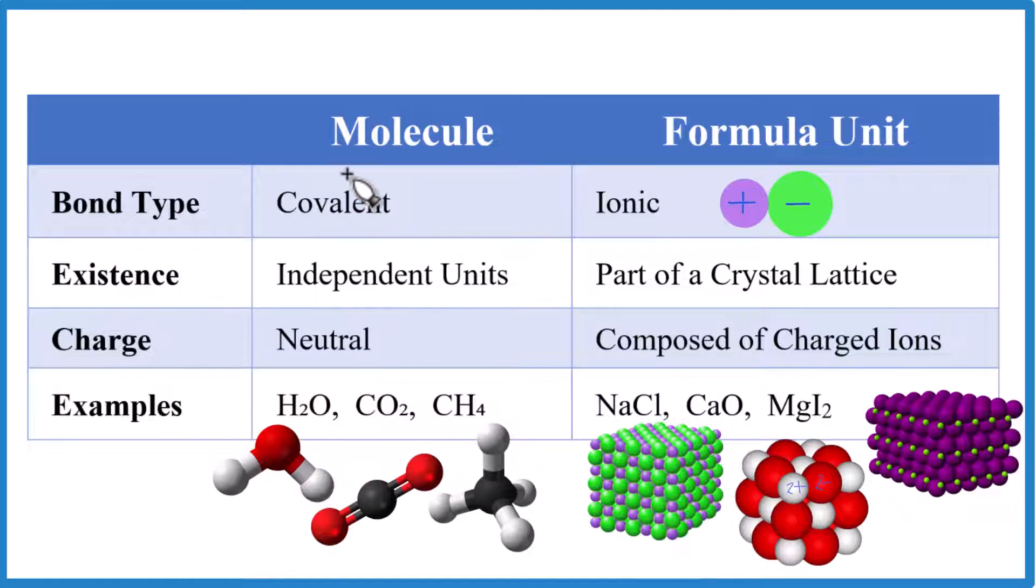The first thing we want to recognize is covalent bonds. Molecules have covalent, also called molecular bonds. That's made of two or more nonmetals. And the electrons in these bonds right here, they're shared. So we have a pair of electrons shared between atoms. Here we have a double bond, two pairs. So molecules have covalent bonds.